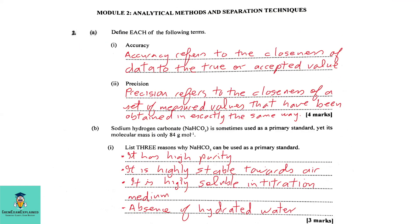To Part A, define each of the following terms. Part 1, Accuracy: Accuracy refers to the closeness of data to the true or accepted value. Part 2, Precision: Precision refers to the closeness of a set of measured values that have been obtained in exactly the same way.